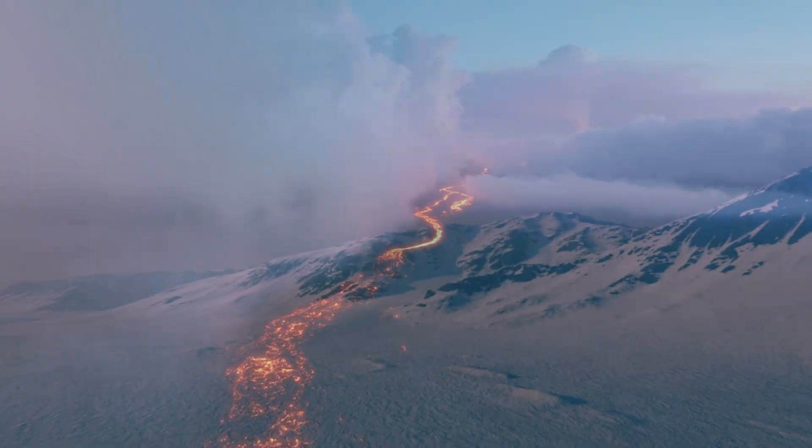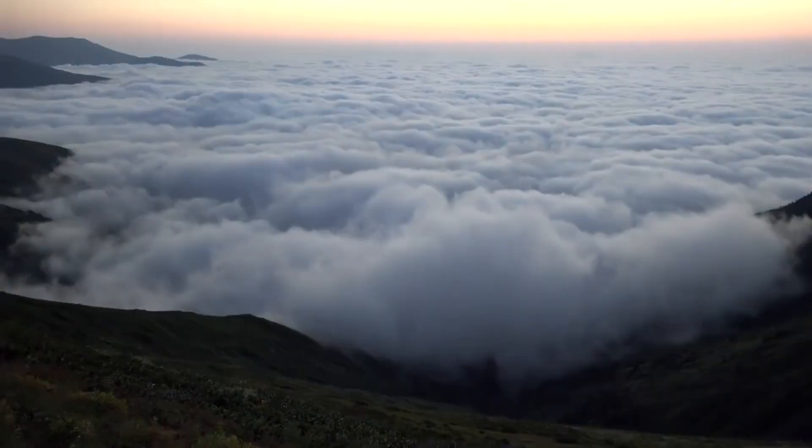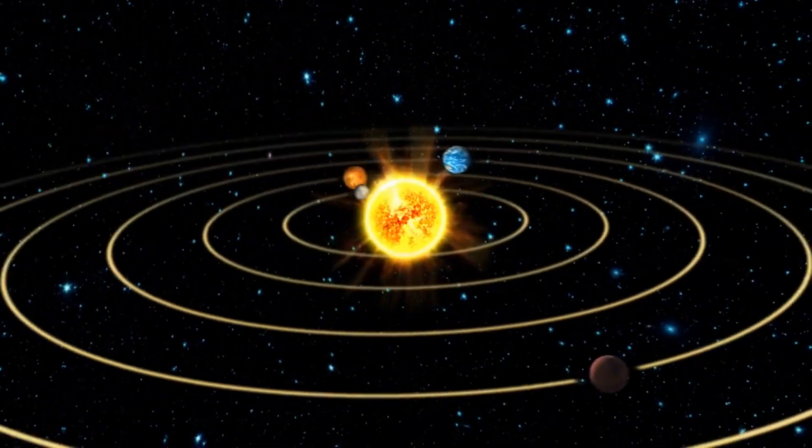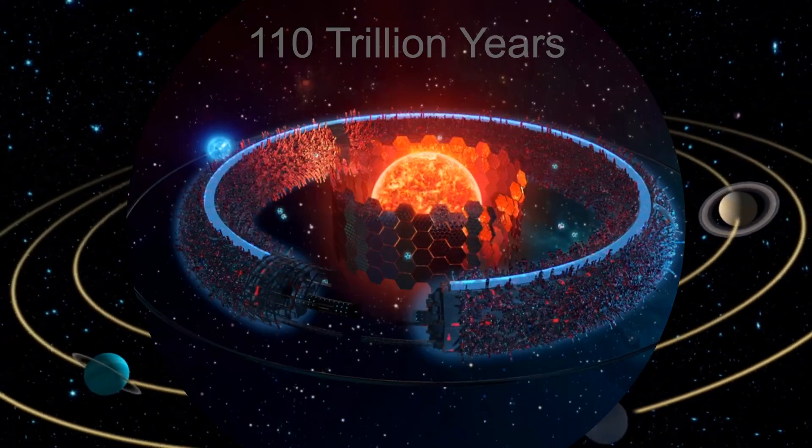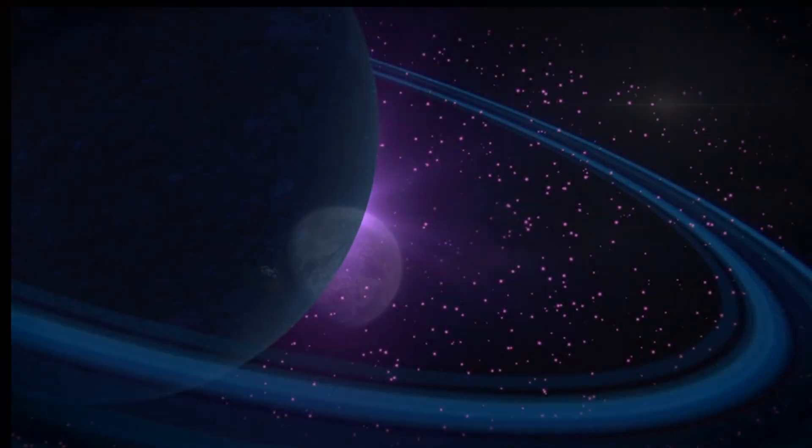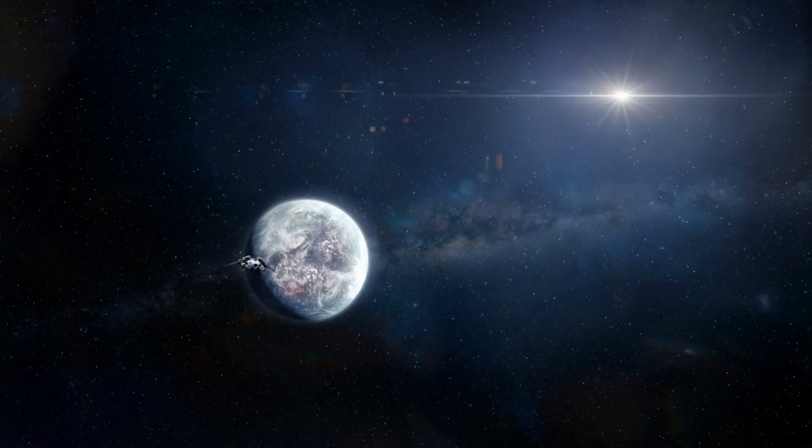Earth has witnessed some incredible events during its 4.54 billion years alive. But our blue marble hasn't even come close to scratching the surface of what it will see during a 110 trillion year lifetime of our solar system. So, what will actually happen?